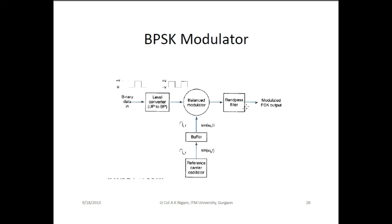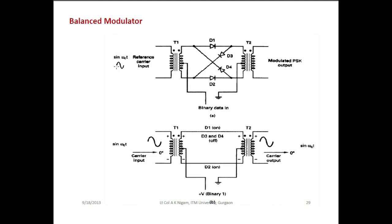Once the signal passes through the bandpass filter, the output is the modulated PSK output in the form of the carrier. During the transition from logic 0 to logic 1 and logic 1 to logic 0, there is always a change in phase. In the balance modulator, the reference carrier input is sin(ωct) — either positive or negative. Two transformers and a bridge rectifier are used to convert to the modulated PSK output. When the positive half cycle occurs, diodes D3 and D4 conduct; during the negative half cycle, D2 conducts. According to that, a 0-degree phase shift is obtained at the output.